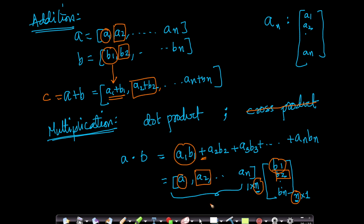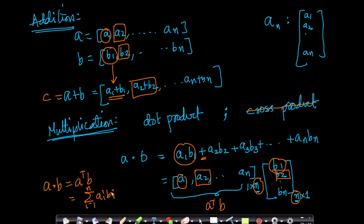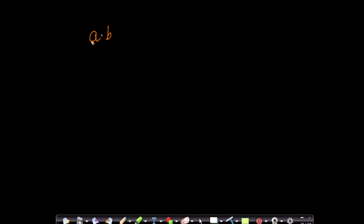So a dot b can be written as a-transpose times b, which boils down to the summation from i equals 1 to n of ai·bi. That is what a dot product is from a pure linear algebraic perspective. Now let's understand geometrically what a dot b means, because connecting geometry with linear algebra is important.